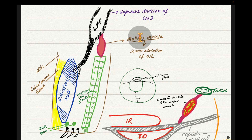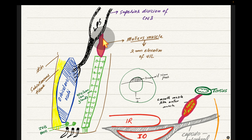In Horner's syndrome, the ptosis is slight because the levator palpebrae superioris — which provides the majority of upper lid elevation — remains intact. Only Müller's muscle is compromised, accounting for just 2 mm of elevation loss.